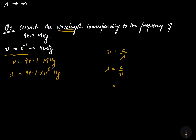The value of C is 3 × 10⁸ meters per second, and the frequency is 98.7 × 10⁶ hertz. Dividing, the wavelength comes out to be 3.03 meters. Because the speed of light was in meters per second, the wavelength is obtained in meters.